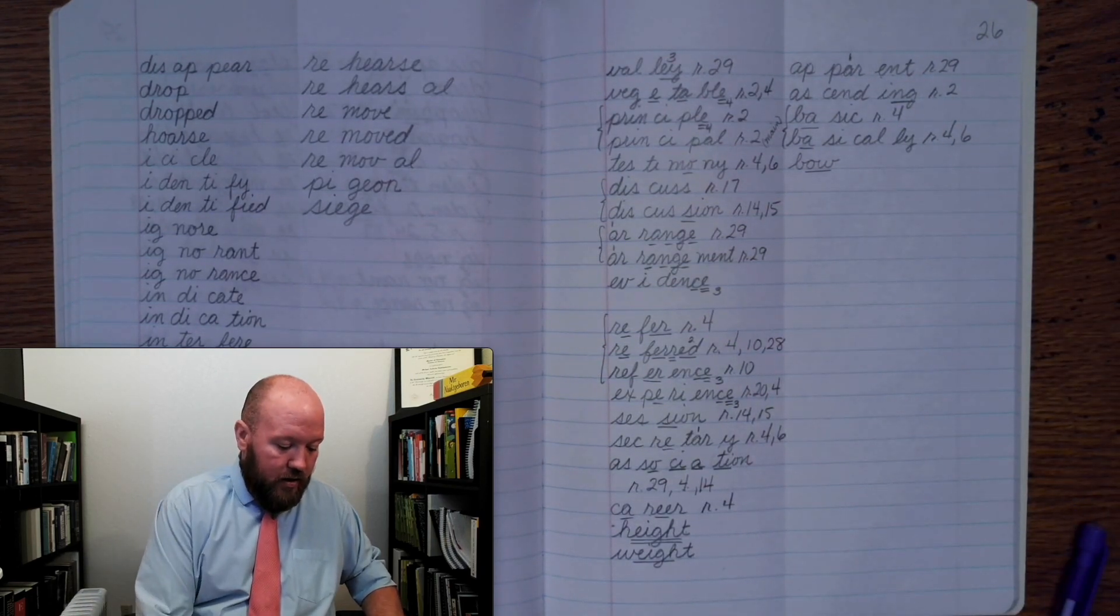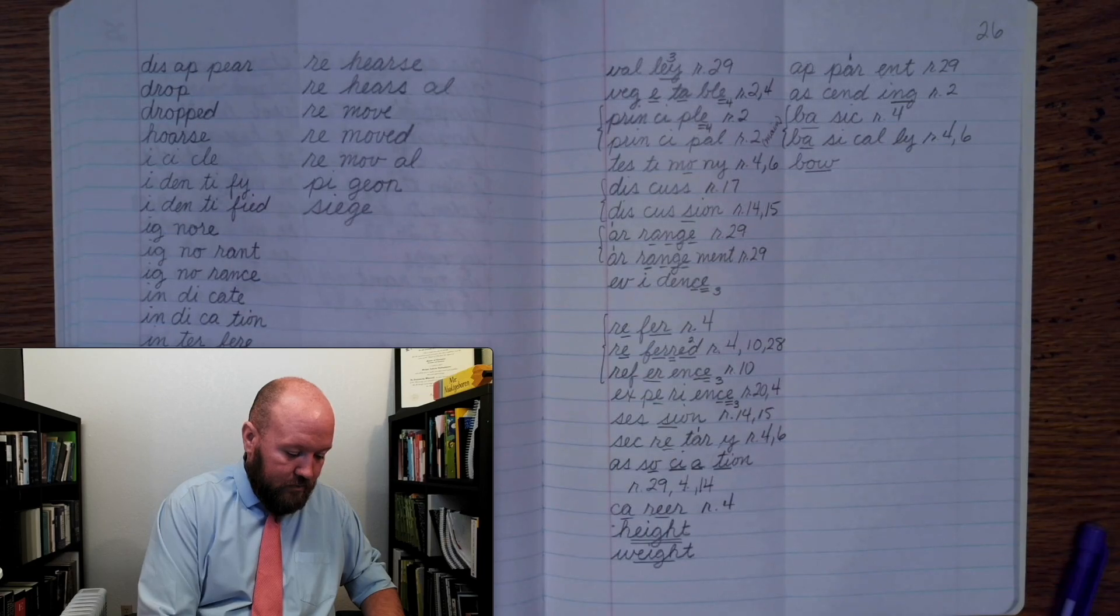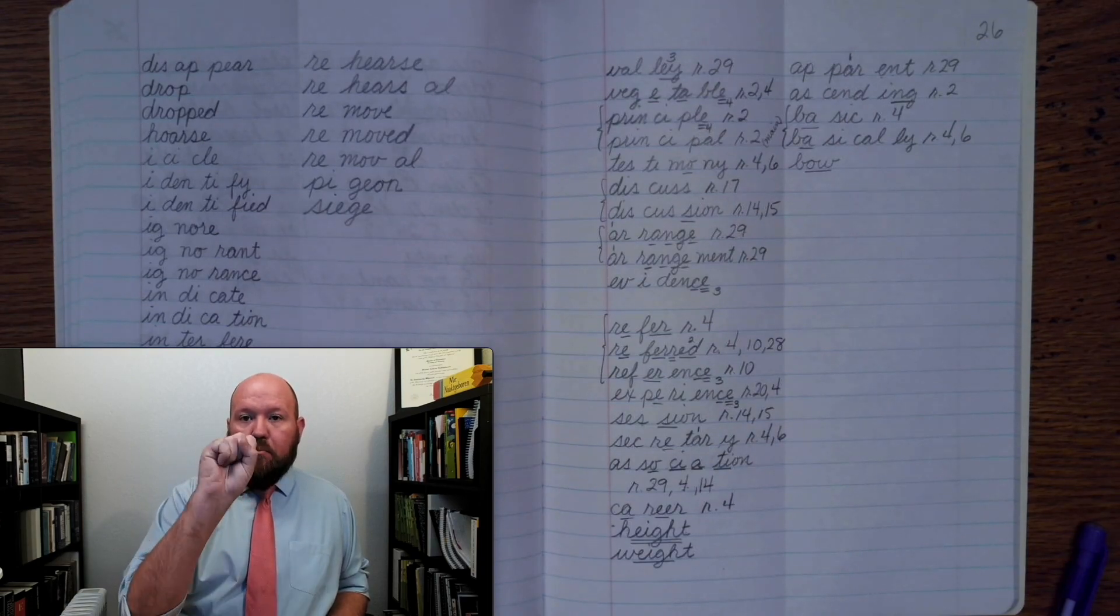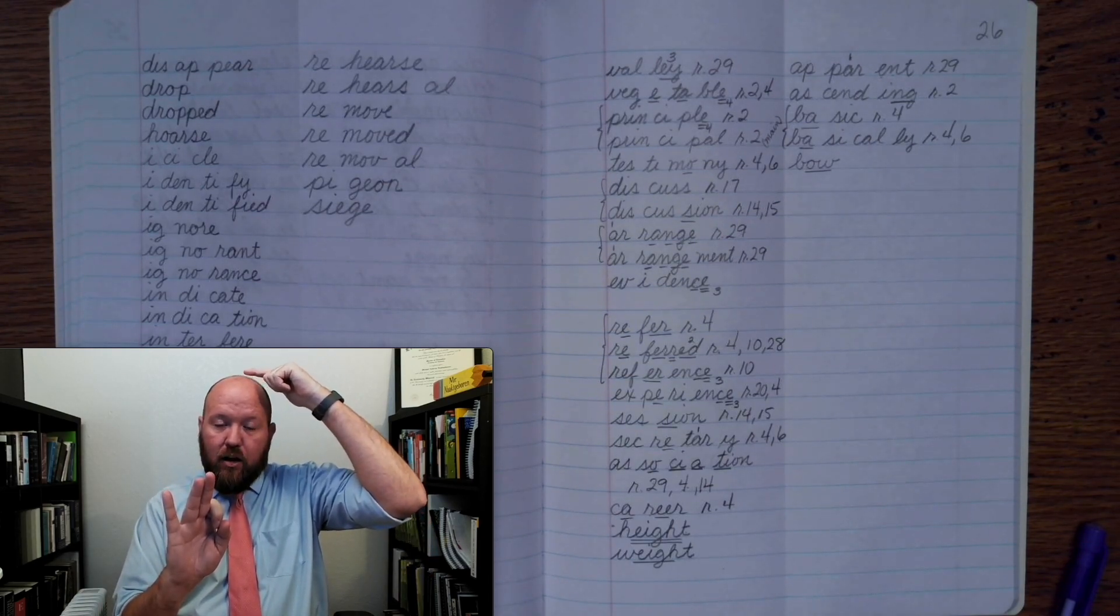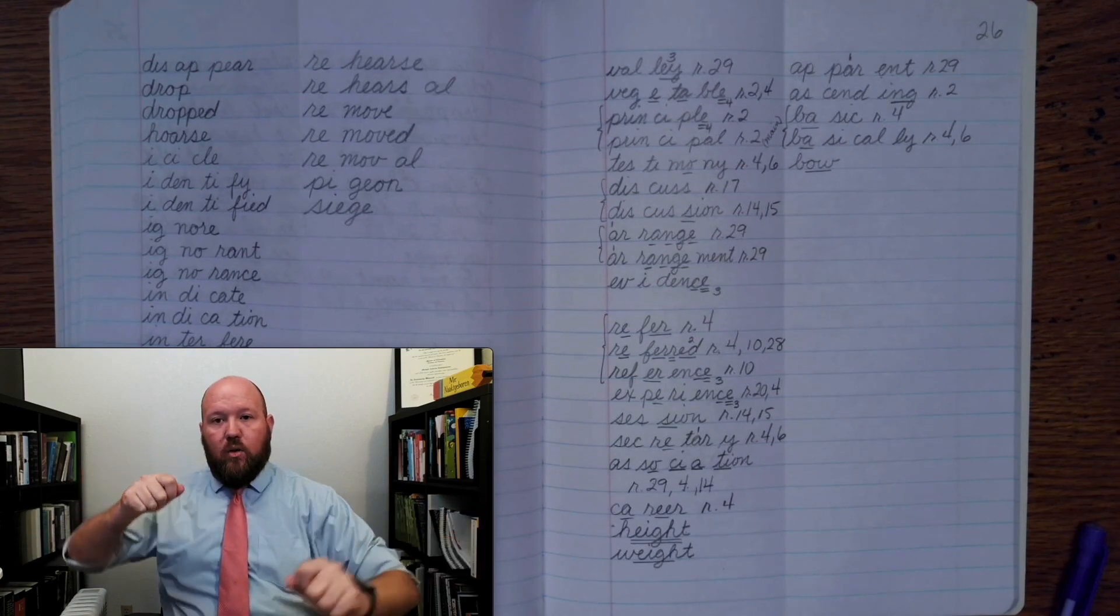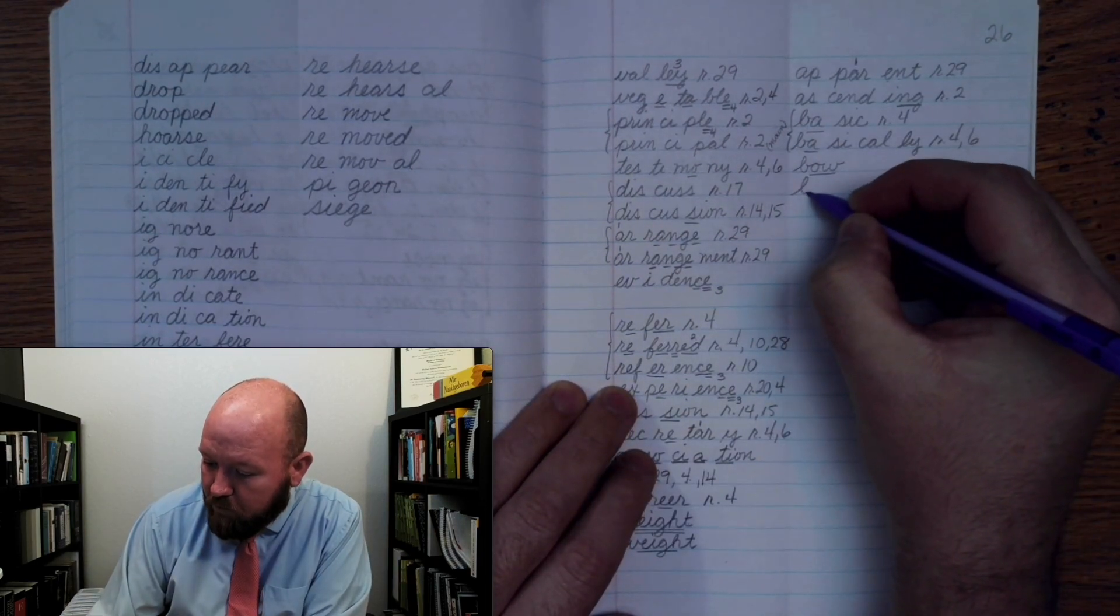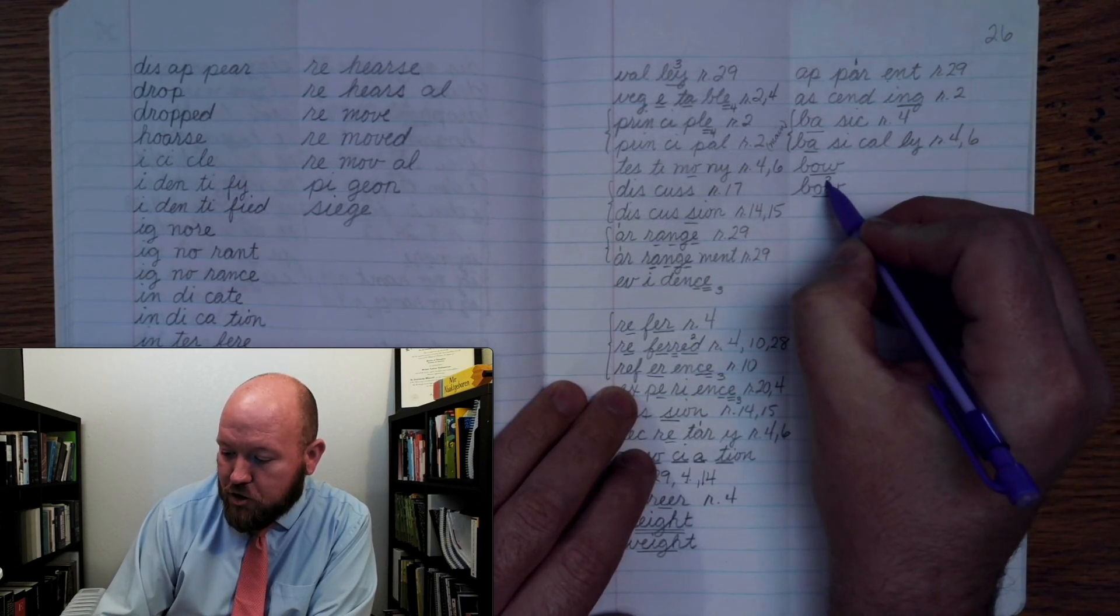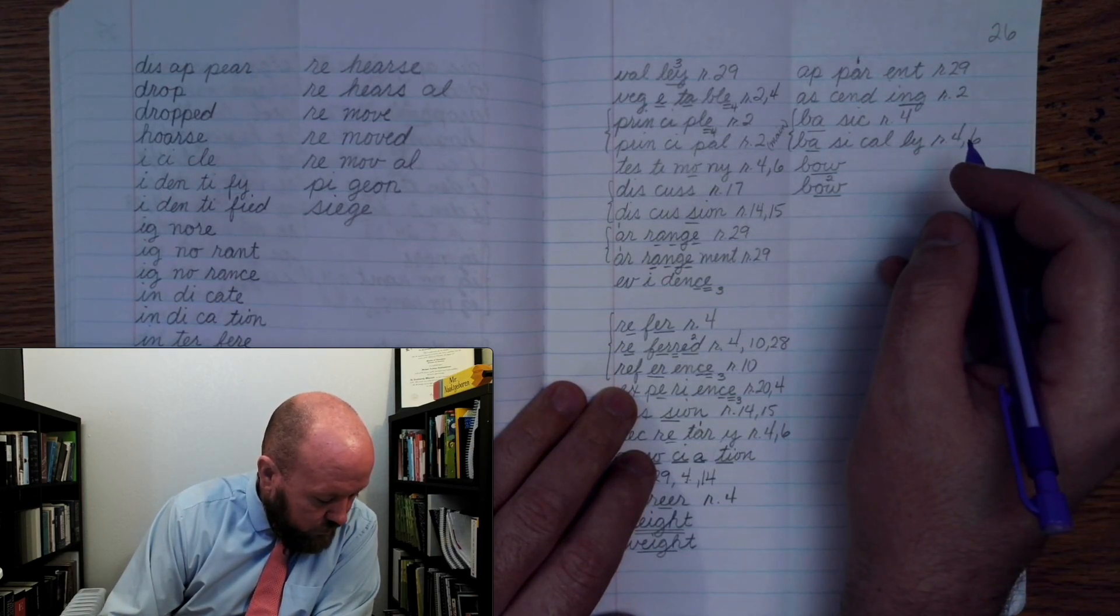Now the next word is bow. Like bow. Buh oh. Bow. Here this would be like a bow in a hair. A bow in your hair. Or like a bow and arrow. Bow. Buh oh. And we're going to use the ow-oh phonogram. Bow. Buh oh. Markings. Buh oh once. Two. Bow.